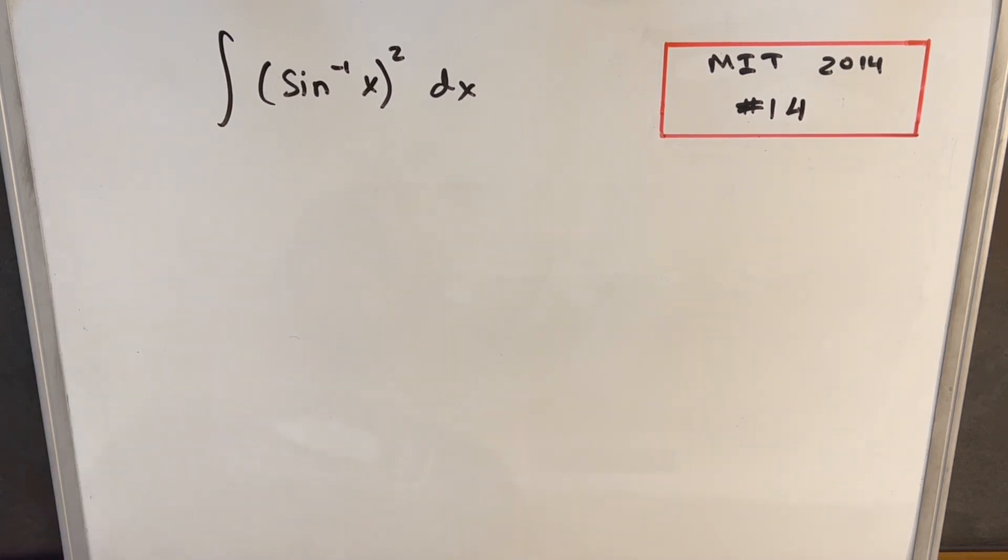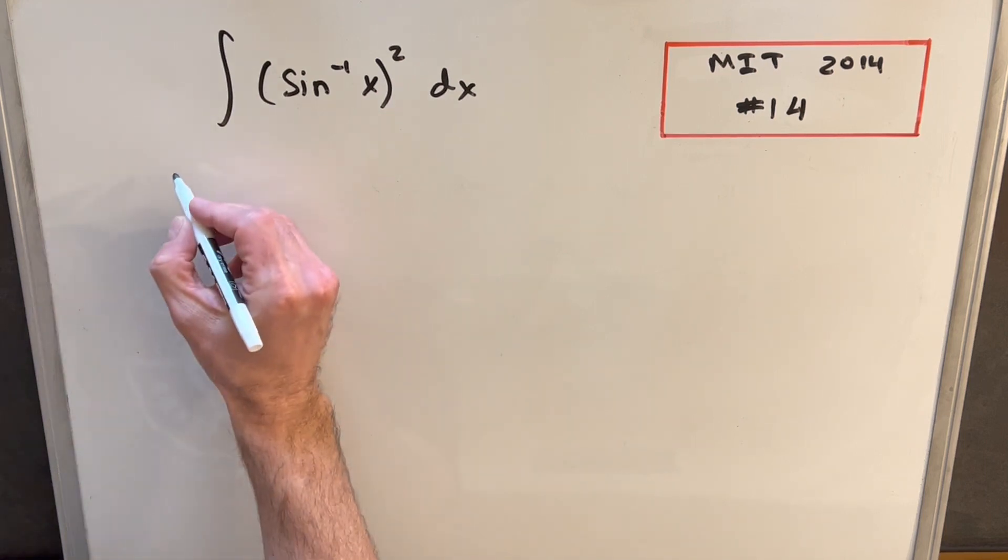We have the integral of arcsine or inverse sine all squared dx. So what we could do to start, we could probably go straight to integration by parts. I didn't try it that way because I think what I want to do is a u-substitution.